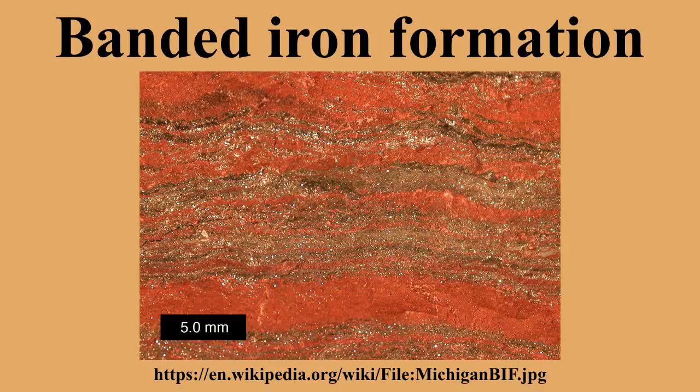The conventional concept is that the banded iron layers were formed in seawater as the result of oxygen released by photosynthetic cyanobacteria. The oxygen then combined with dissolved iron in Earth's oceans to form insoluble iron oxides, which precipitated out, forming a thin layer on the ocean floor, which may have been anoxic mud.